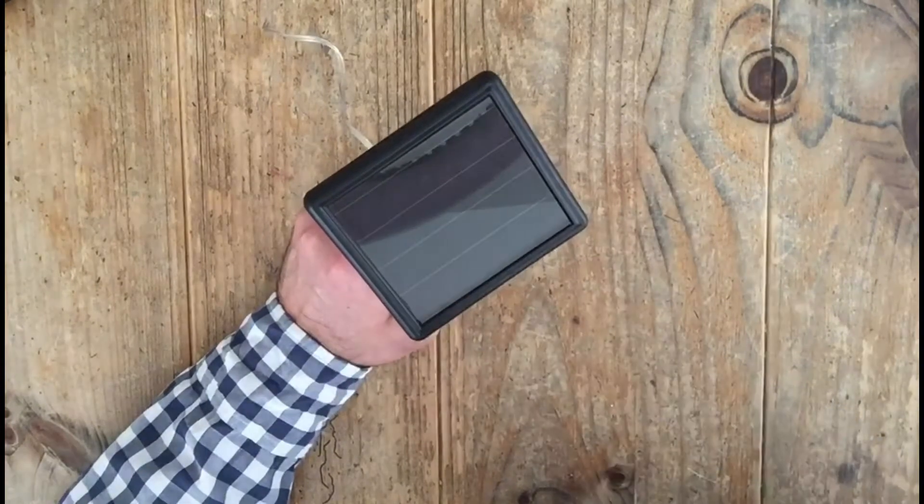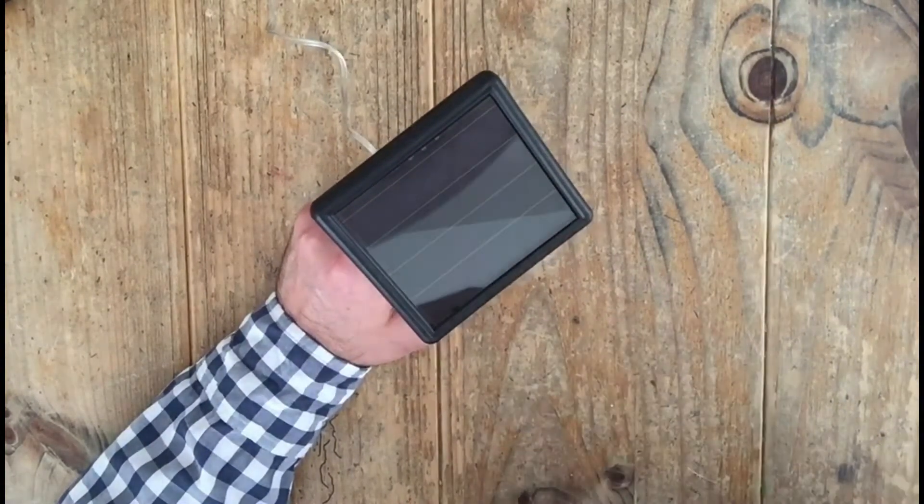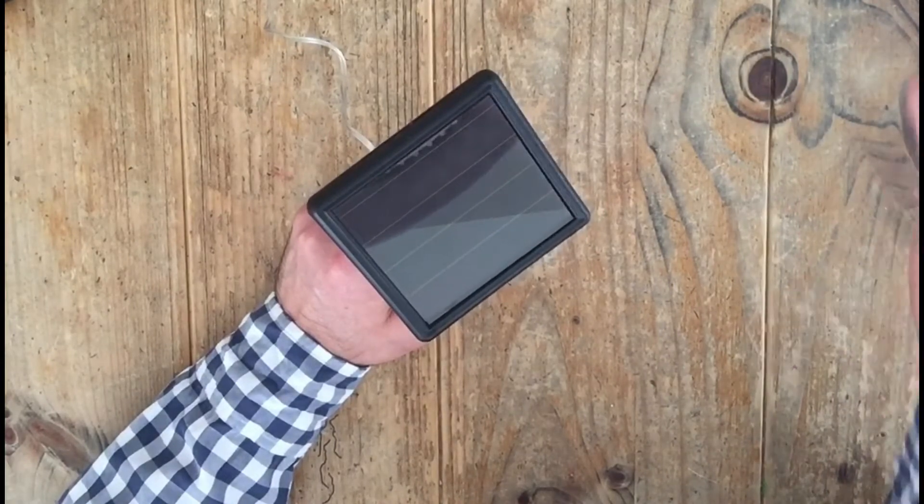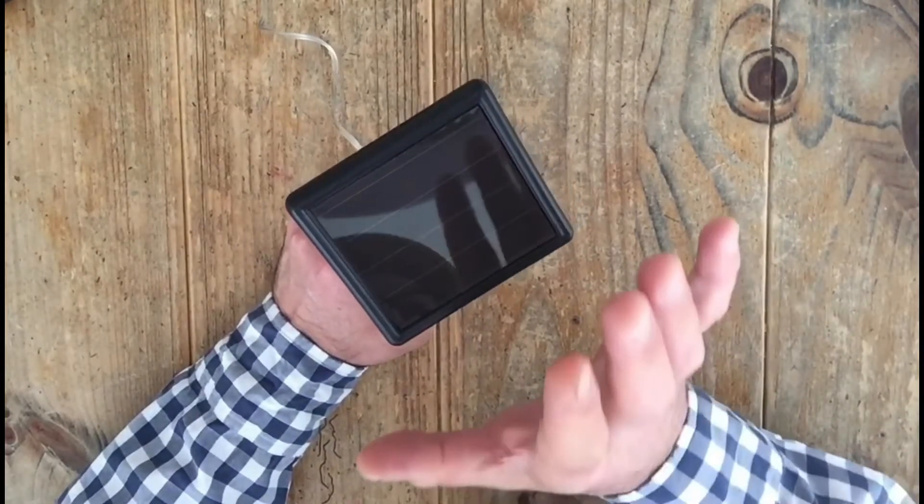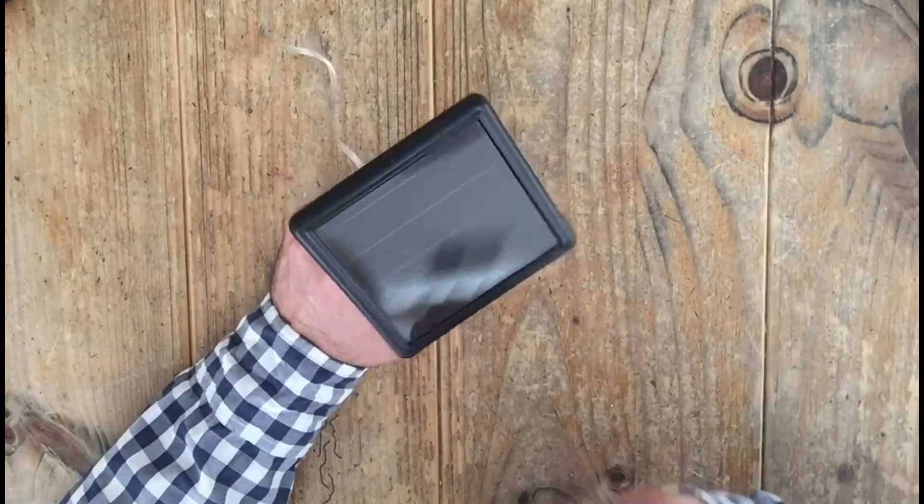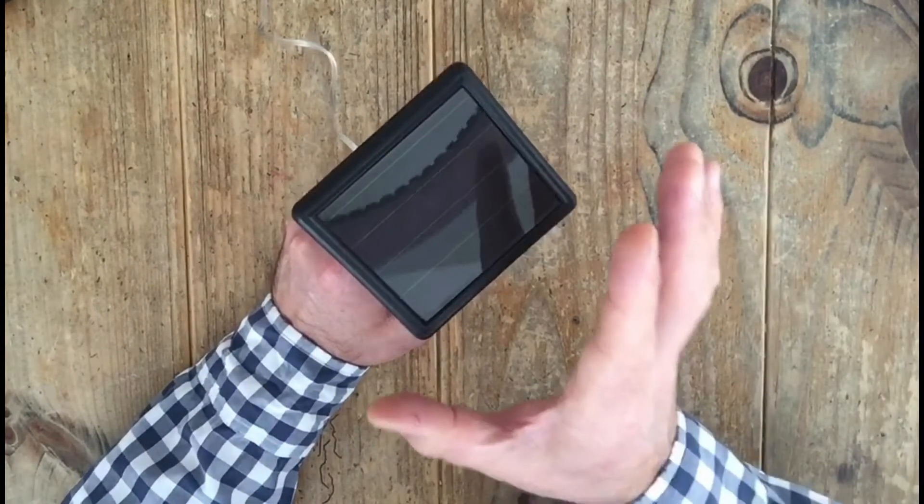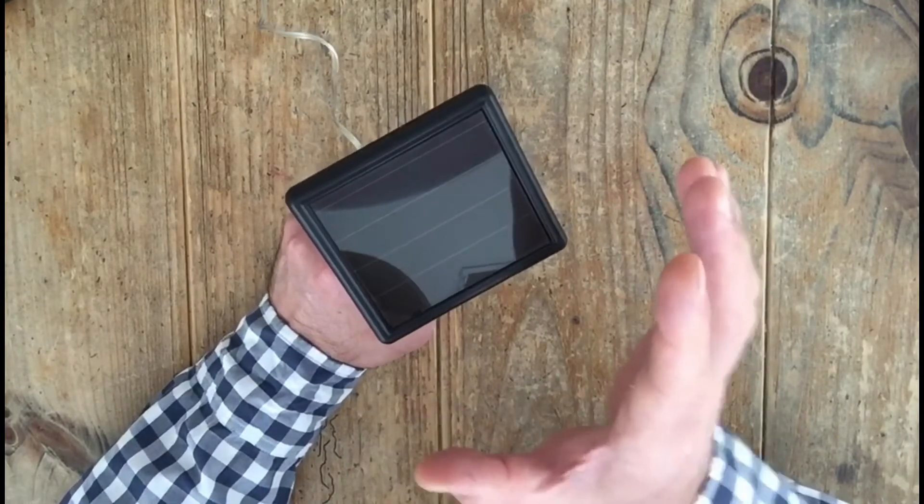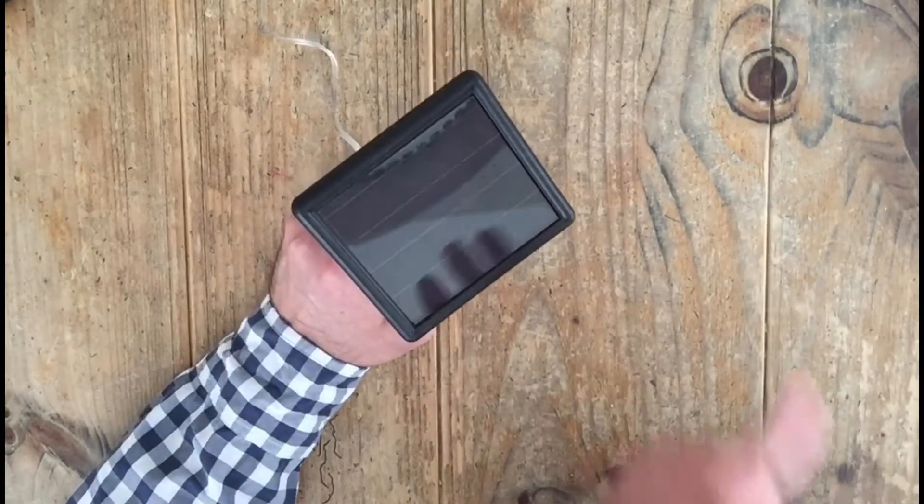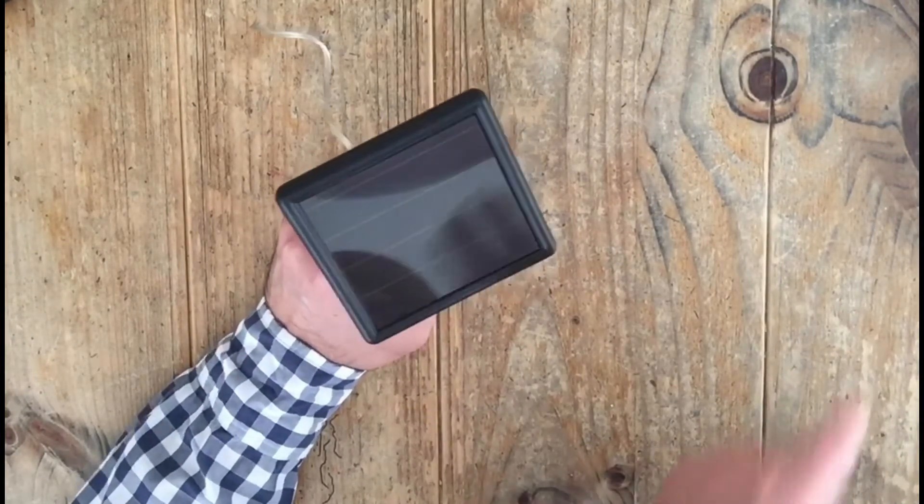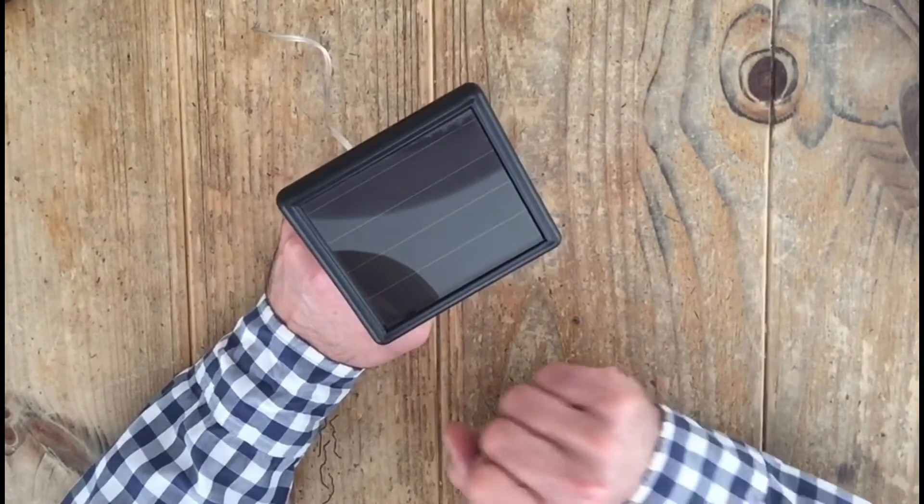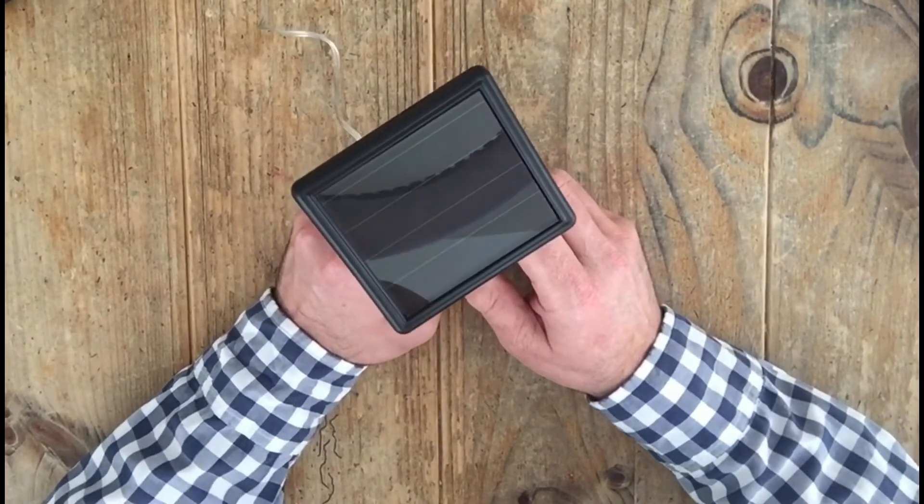The second thing to keep in mind is the photocell in here can't tell the difference between artificial and natural light. So if you install this near a security light that's on at night or near a porch light, this will fool the photocell into turning your lights off. So full sunlight during the day and away from any lights that might interfere with the photocell during the night hours.